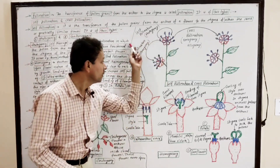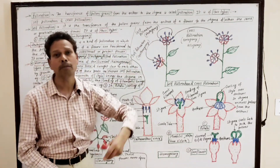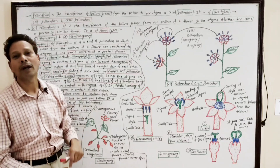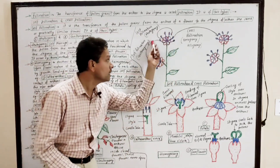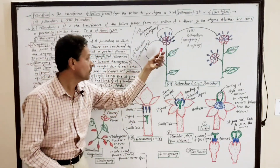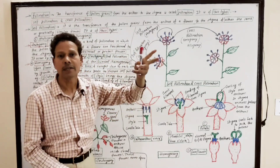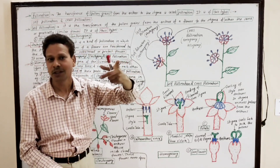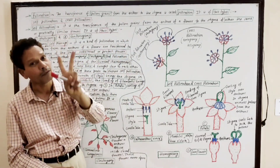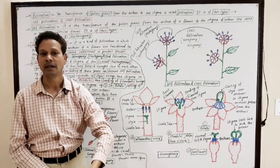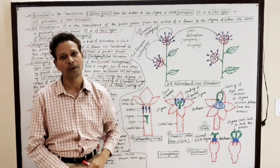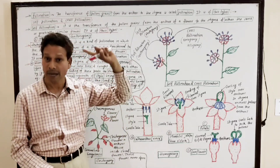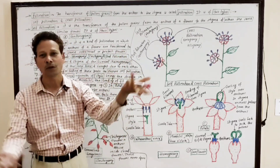The next type is geitonogamy. It is a type of self-pollination. Unlike homogamy, which occurs in the same flower, geitonogamy occurs between different flowers of the same plant or different plants having the same genetic material, like a clone. This concludes self-pollination; in the next lecture, cross-pollination will be discussed.